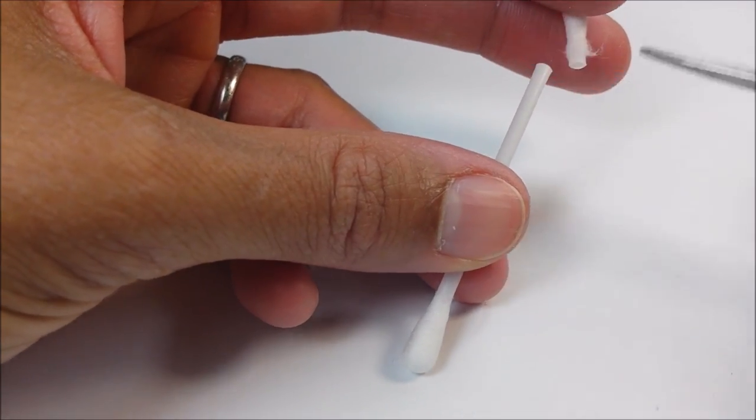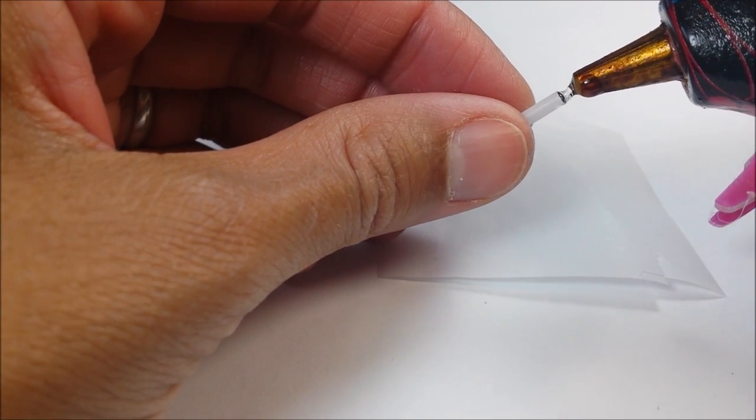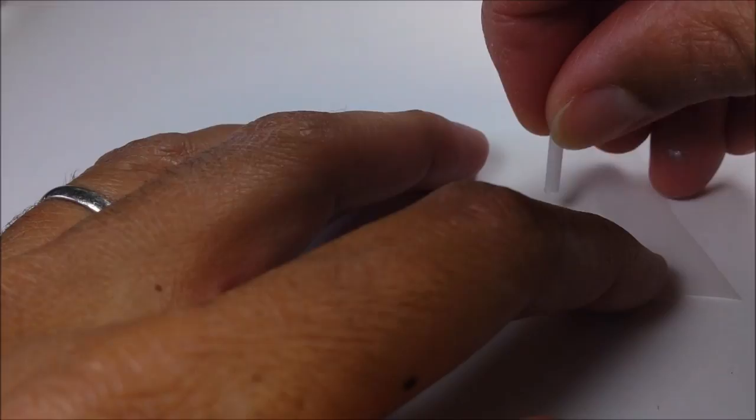Then I cut off a section from a hollow Q-tip. Seal one end. Again, on my parchment paper.